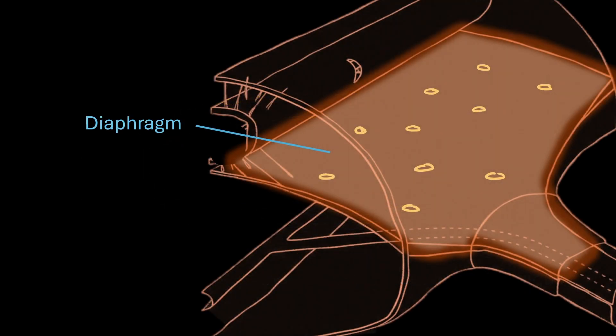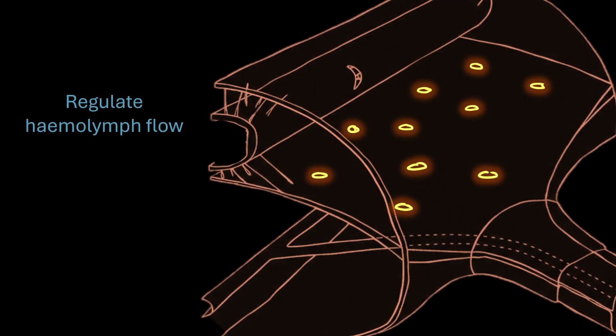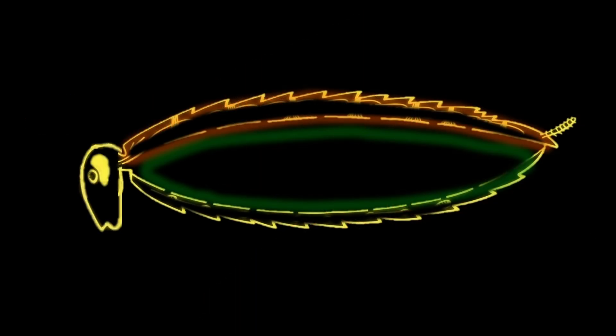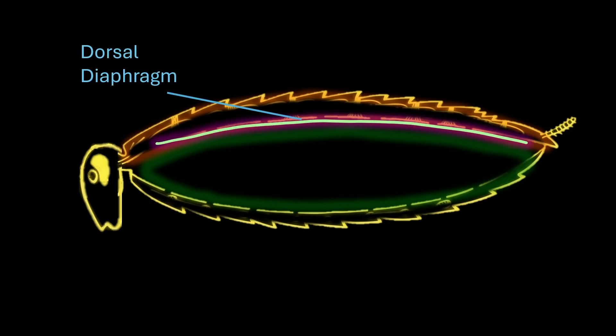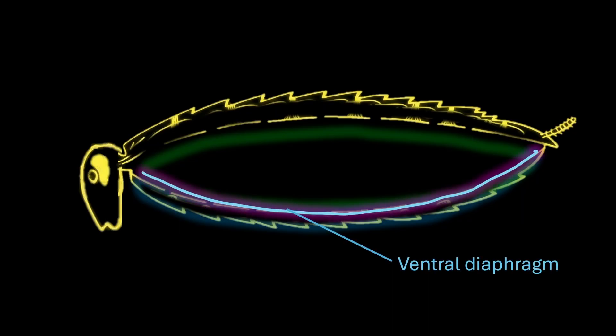Each diaphragm has valvular pores that help regulate hemolymph flow. The diaphragm between the pericardial sinus and perivisceral sinus is called the dorsal diaphragm, while the diaphragm between the perivisceral sinus and perineural sinus is called the ventral diaphragm.